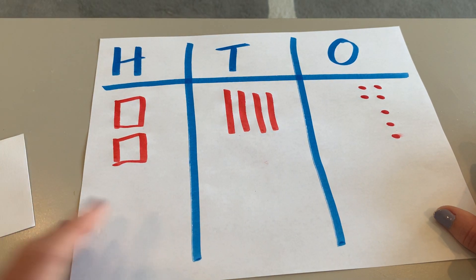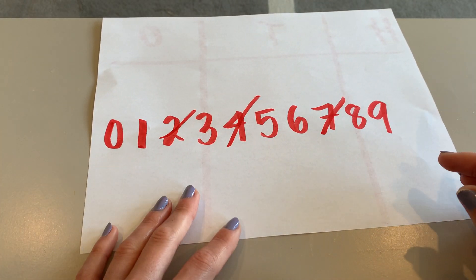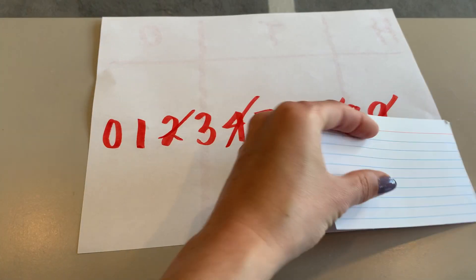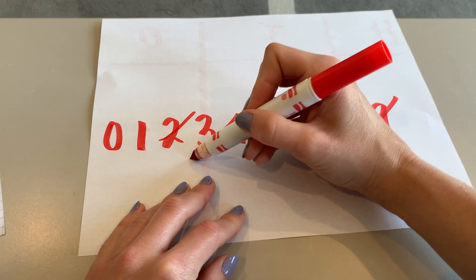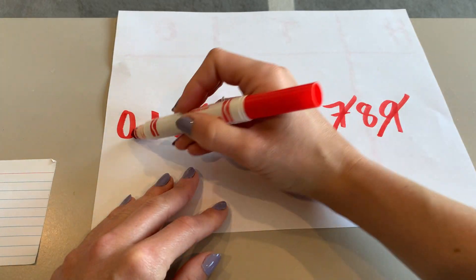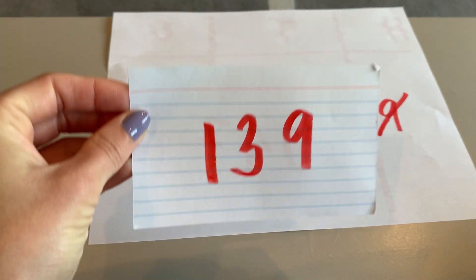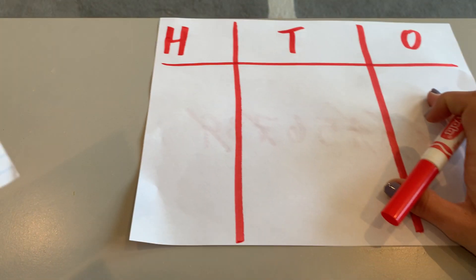Now I can continue practicing. My new number, I'm going to use the nine in the ones. Let's go for a three in the tens and a one for the hundreds. So now I'm going to draw my number 139. Here we go.